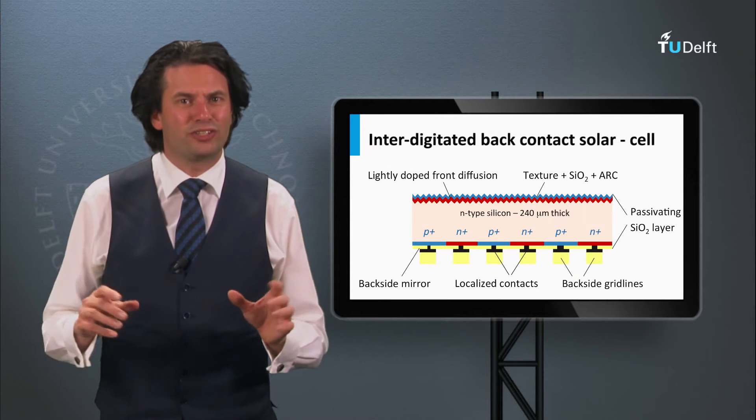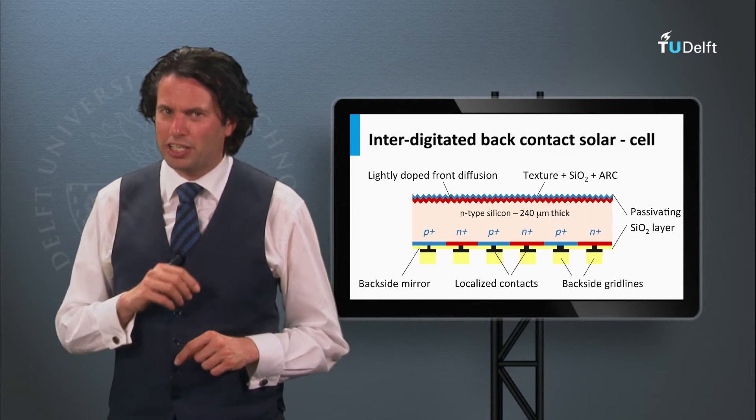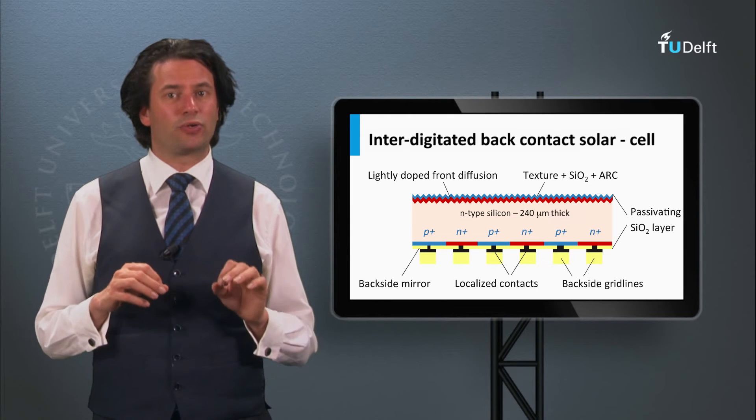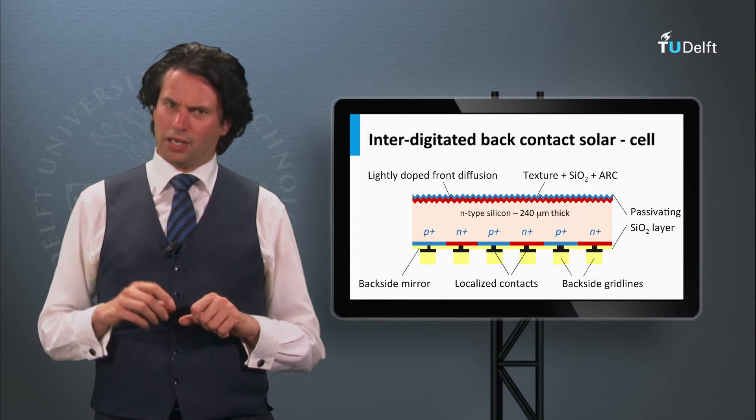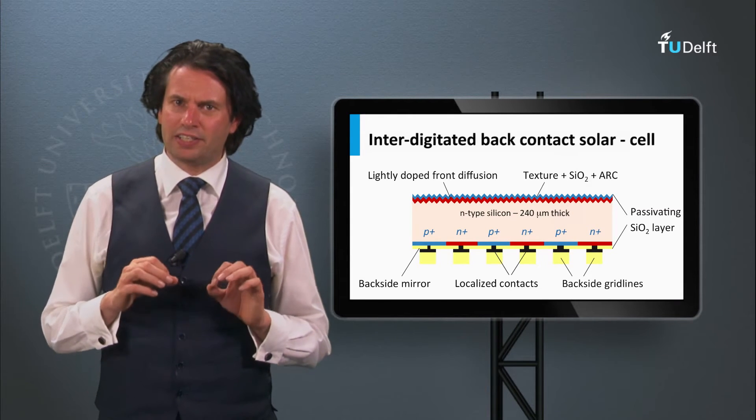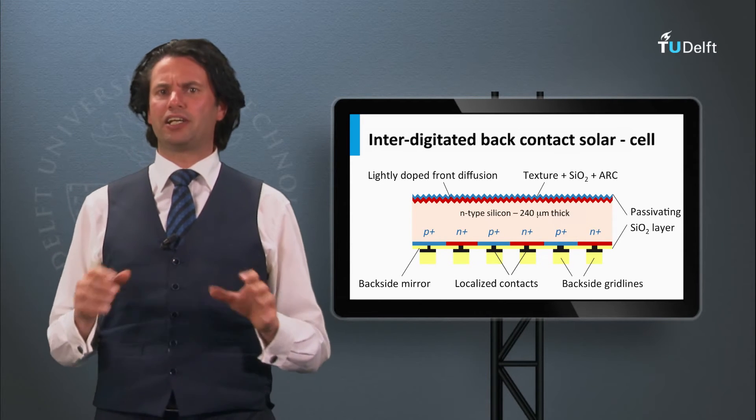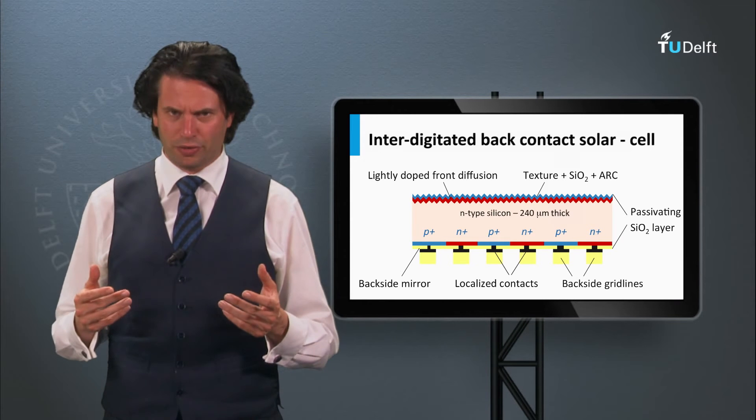A second successful cell concept, which is commercialized by SunPower, is the interdigitated back-contact solar cell. The principle of interdigitated back-contact concepts is that it does not suffer from shading losses of a front metal contact grid.